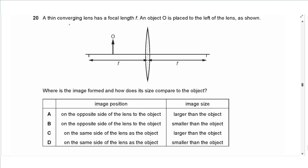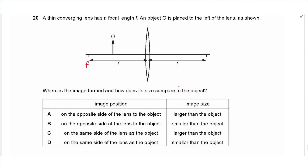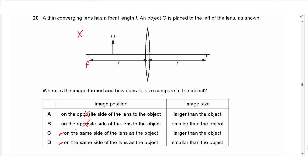Question 20: a thin converging lens has focal length F, and object O is placed between the focal point and the lens. The image is always virtual, always on the same side as the object, always upright, and always magnified — larger than the object. The answer is C.